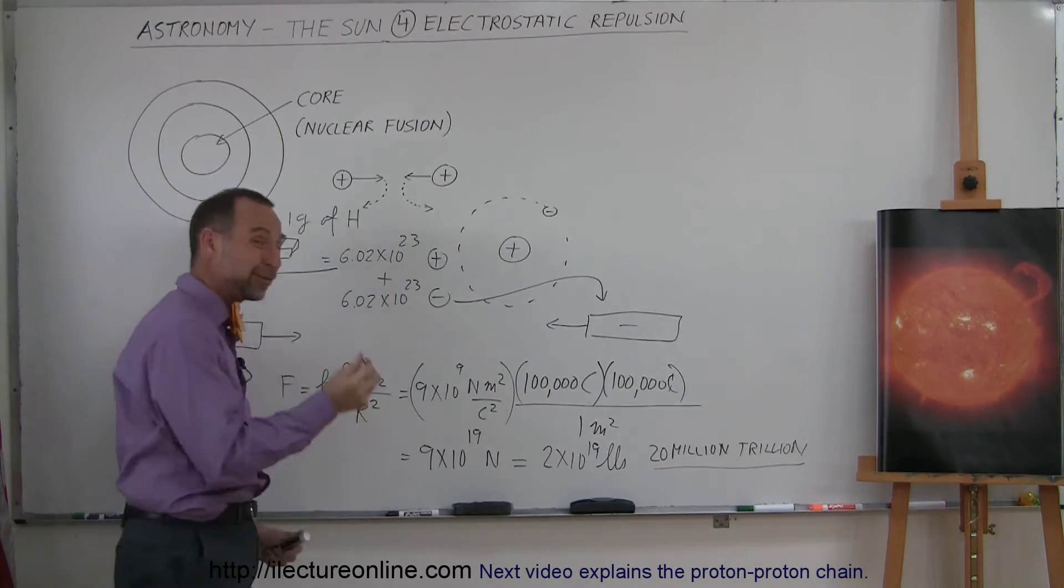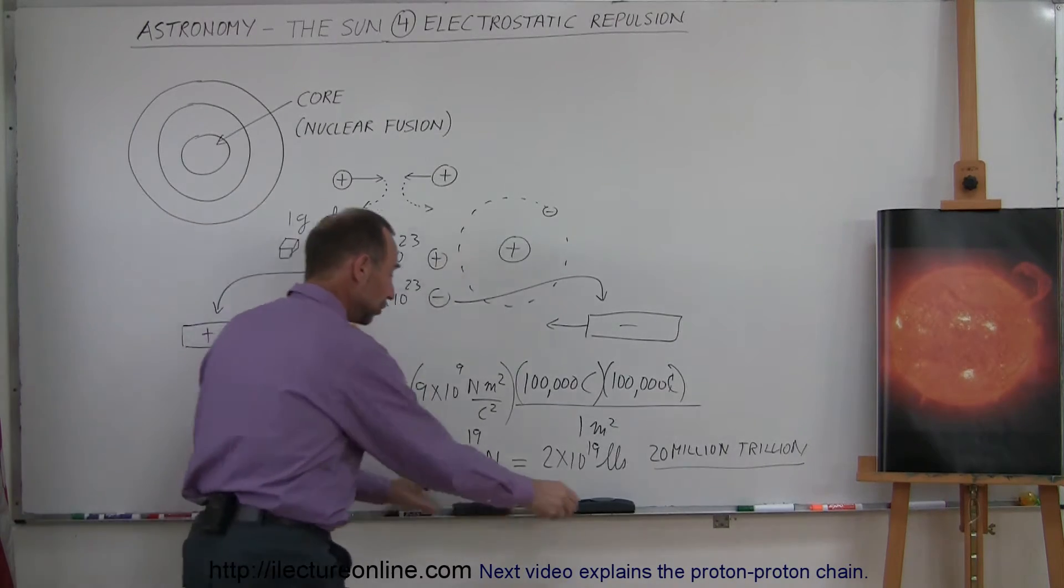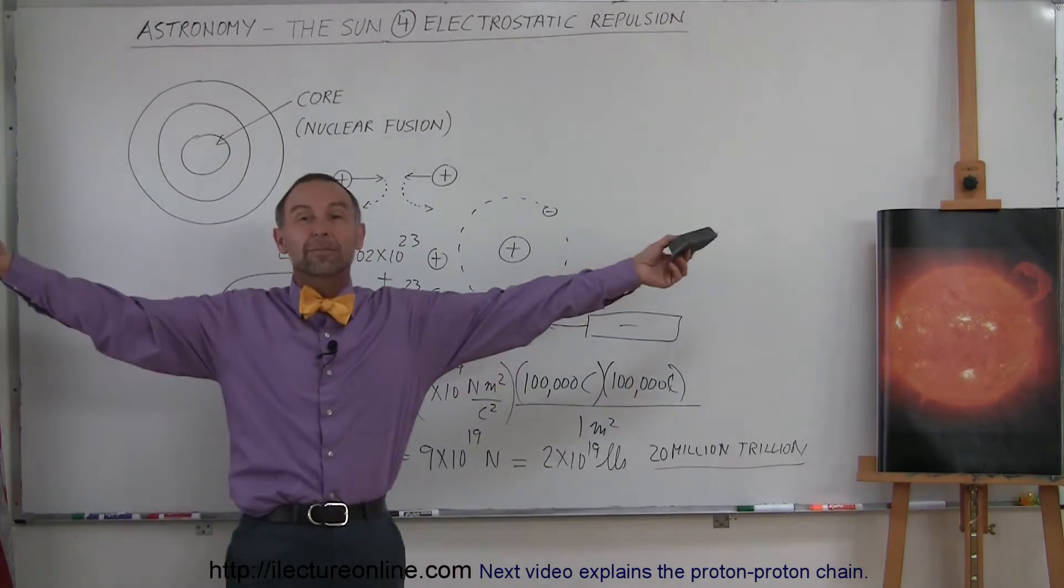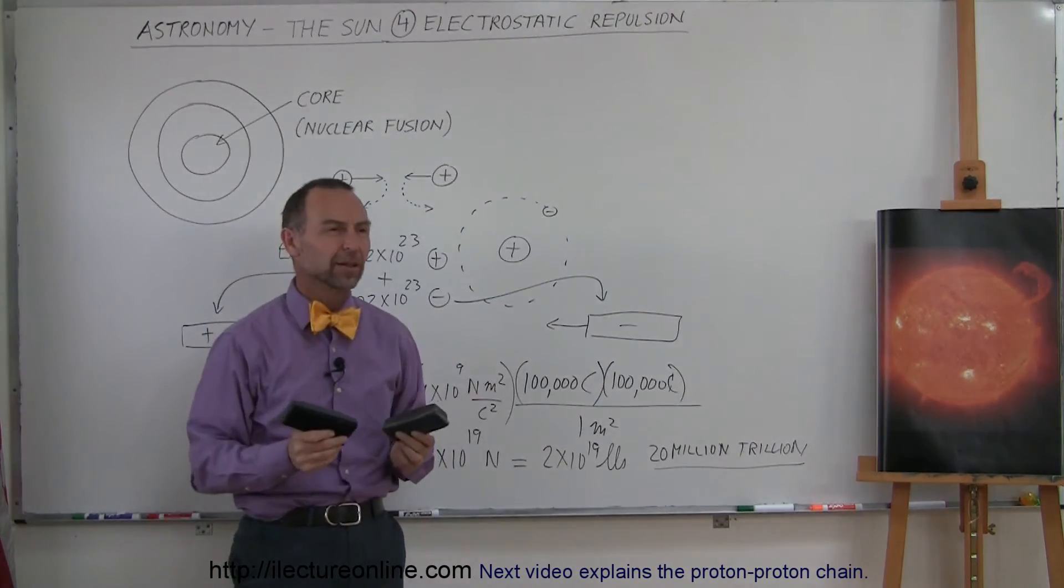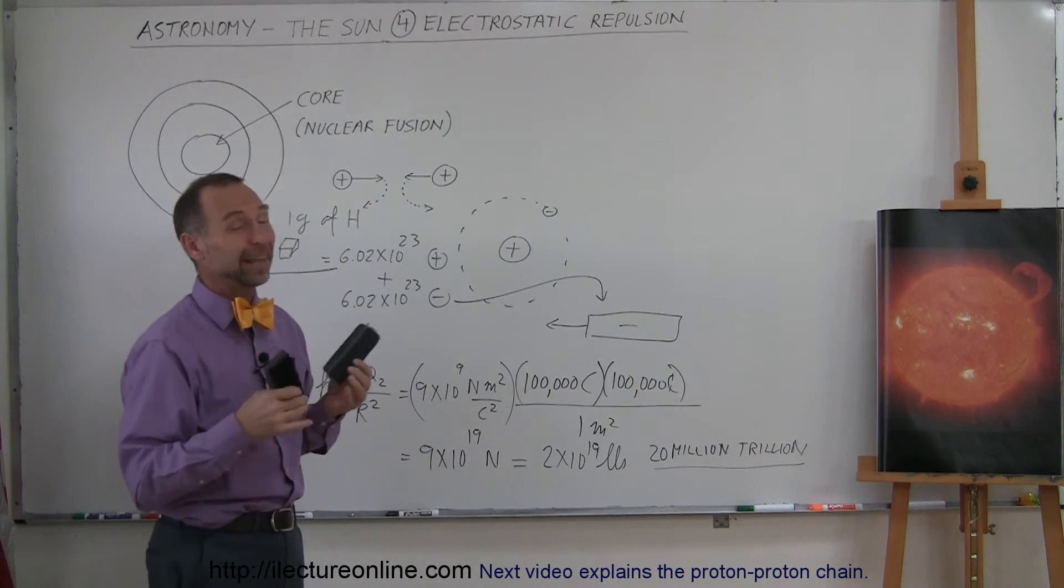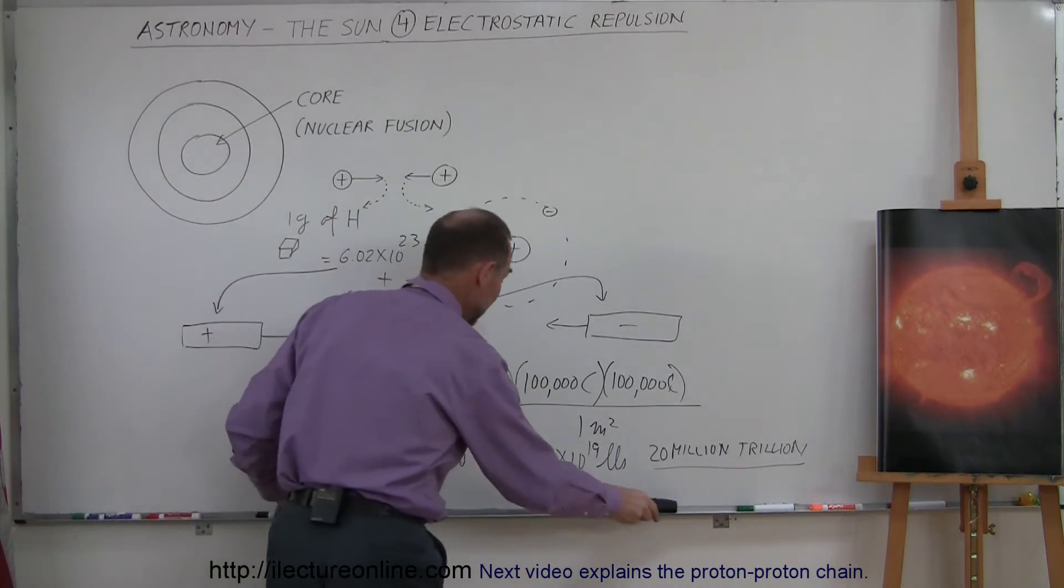Imagine one gram of hydrogen separated into protons and electrons, put in two little boxes this far apart, you would have a force of millions of trillions of pounds trying to pull these together. So electrostatic forces are just absolutely enormous. That's why electricity is so dangerous. It doesn't take a lot of charge to make electricity really, really dangerous.